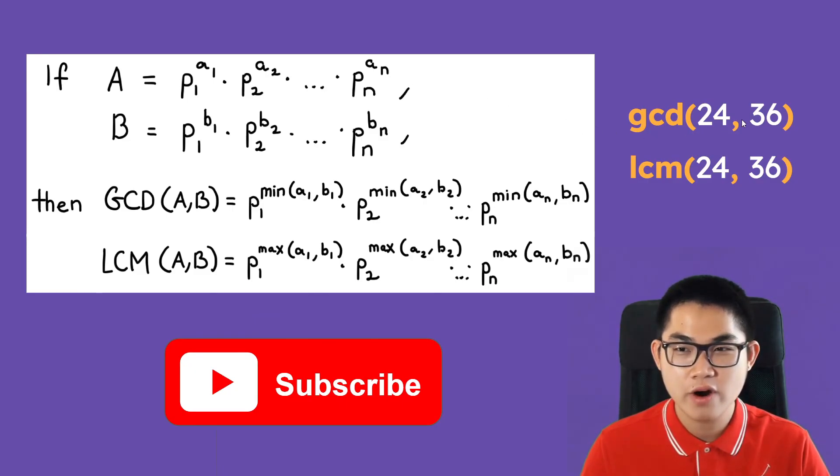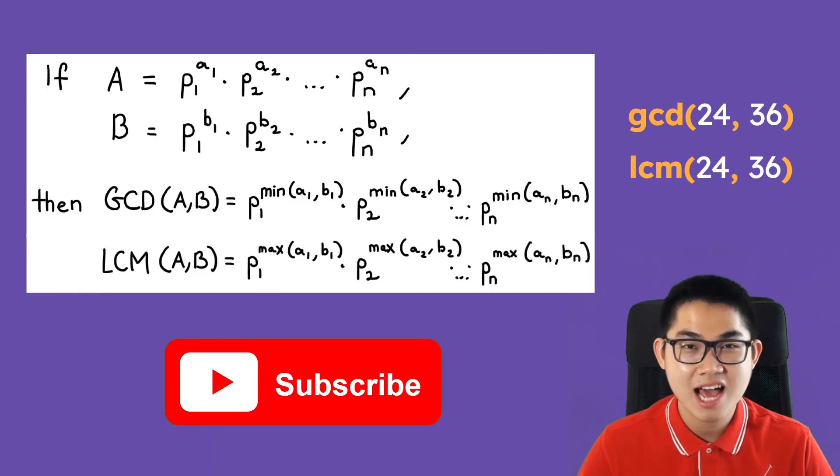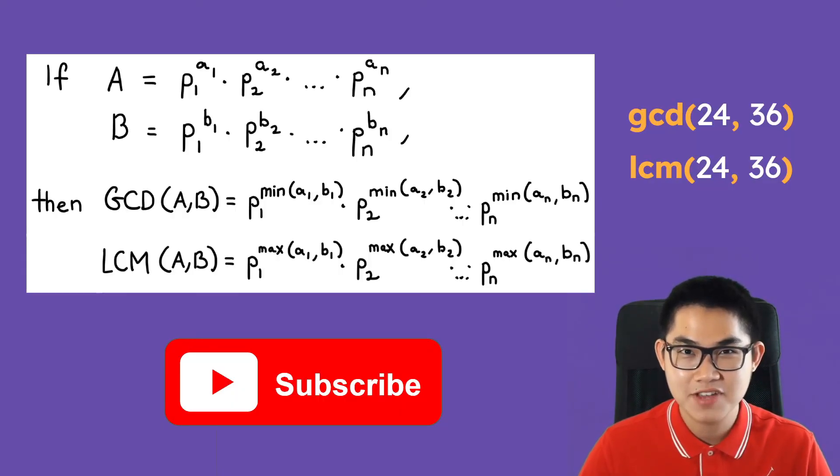In the next video I'm going to show you another way to calculate the GCD and the LCM using the Euclidean algorithm and it's not hard, it's very easy. And that's basically it for today. I hope you enjoyed this video and I hope everything made sense. Don't forget to like, subscribe and share with your classmates and I'll see you in the next video.